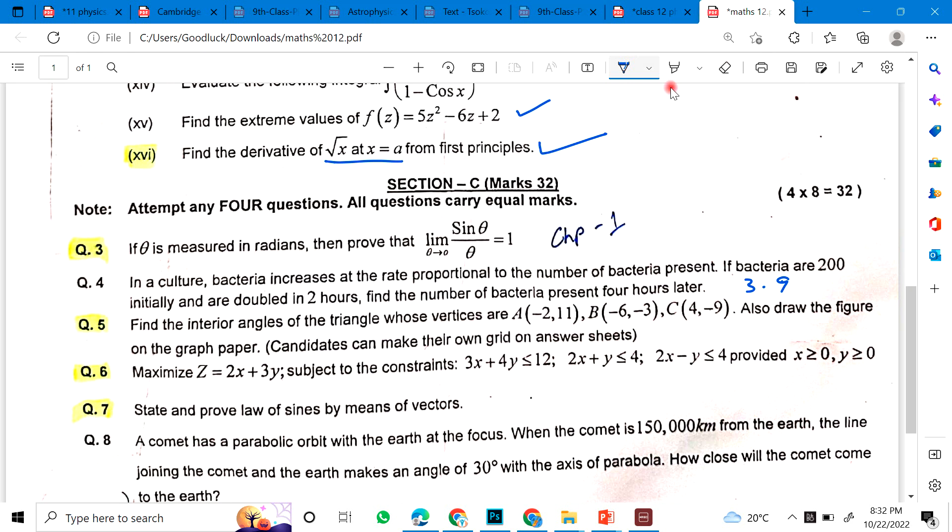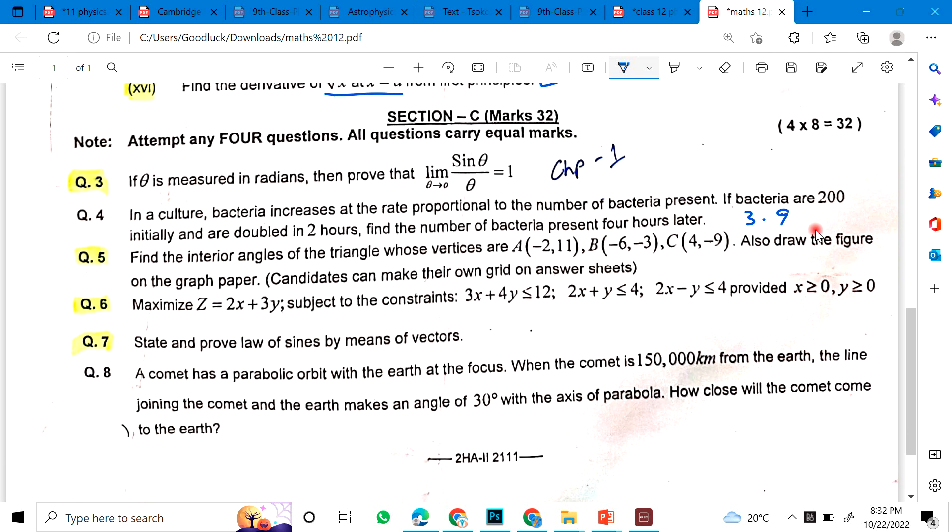Then find the interior angles of the triangle whose vertices are, also draw the figure on the graph paper. You have to maximize this. This is from 5.3. State and proof law of sines by means of vectors. Law of sines, you know: A over sin alpha, B over sin beta, C over sin gamma.